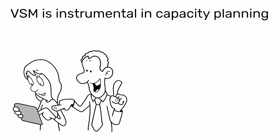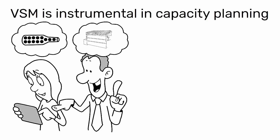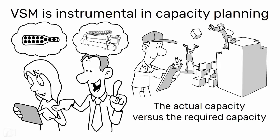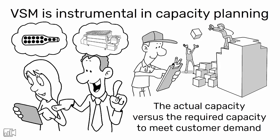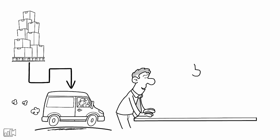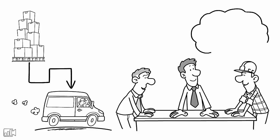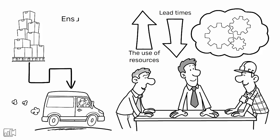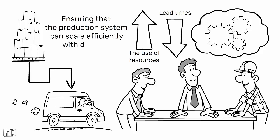VSM is instrumental in capacity planning as it helps identify bottlenecks and waste, allowing for a clear understanding of the actual capacity versus the required capacity to meet customer demand. By mapping out each step from raw material to delivery, VSM enables engineers to design a future state of operations that optimizes the use of resources and minimizes lead times, ensuring that the production system can scale efficiently with demand.